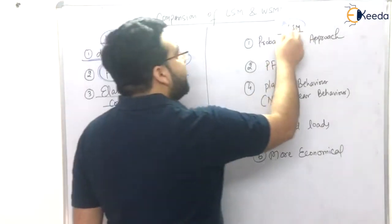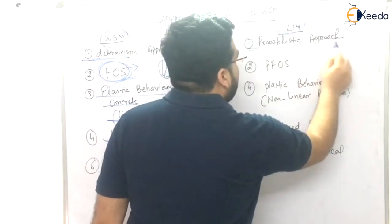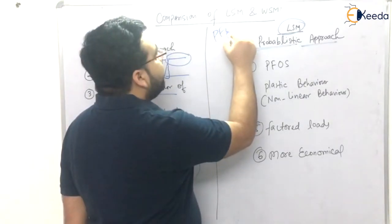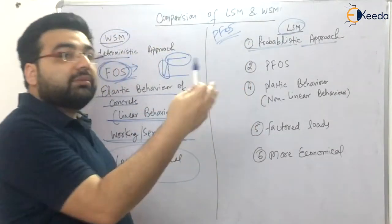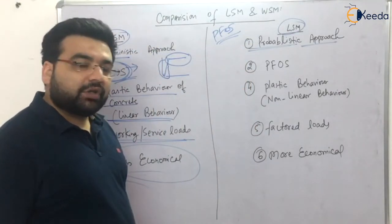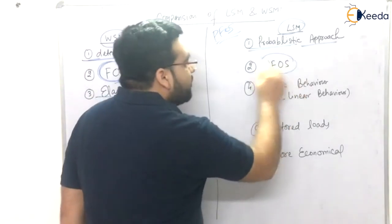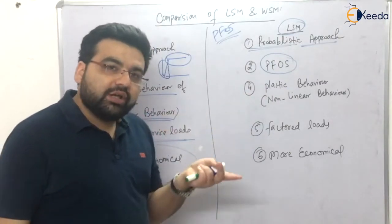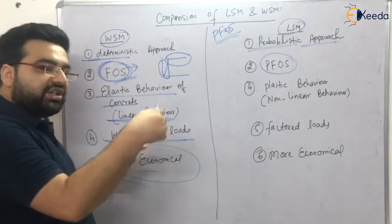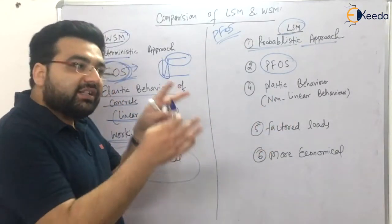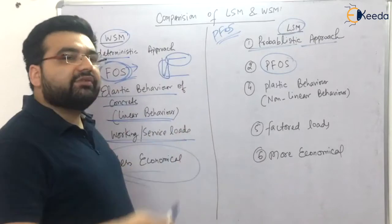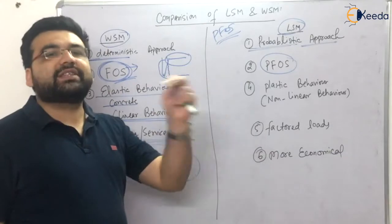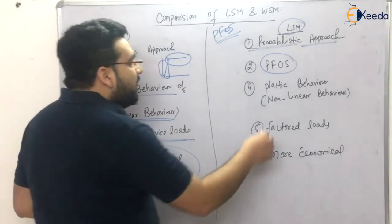Coming to the limit state method, it is a probabilistic approach. Many methods of statistics and probability are used to determine the partial factor of safety, and it is more accurate compared to the working stress method. Partial factors of safety are taken into consideration and applied two times: first, you multiply the working load by the partial factor of safety to get the ultimate load, and then you divide the strength for that load again by the partial factor of safety. This means you are providing a two-way factor of safety.